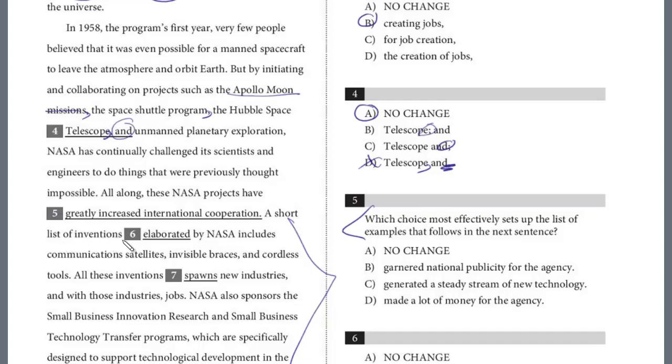A short list of inventions elaborated by NASA includes communication satellites, invisible braces, and cordless tools. All these inventions spawns new industries, and with those industries, jobs. And so, no, this is not about cooperation, this is about the technology or the developments that NASA has promoted, and they've followed since that. We've got these examples of communication satellites, these braces. This is not cooperation. This is how NASA has generated a steady stream of technology, right? Evidence-based writing, so look for the clues.